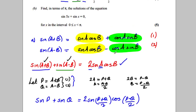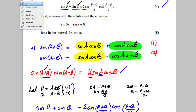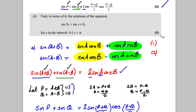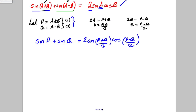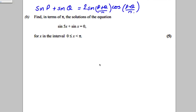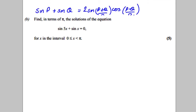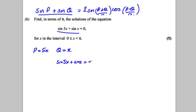Then it says for part B: find in terms of pi the solutions of this equation. In these types of questions you're going to use part A to solve them. Can you spot that we have a similar form here? We could let P be 5X and Q be X, so we're solving sine(5X) plus sine(X) equals zero.